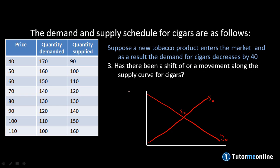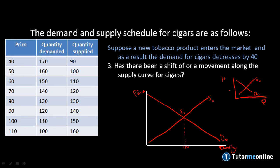As with all supply and demand curves we need to label our axes — price on the vertical axis and quantity on the horizontal axis. We put in our original market and we know that the original equilibrium quantity was 130. Now a new tobacco product has entered the market, which has its own supply and demand curve. Some of the demand from cigars moved to this new tobacco product.